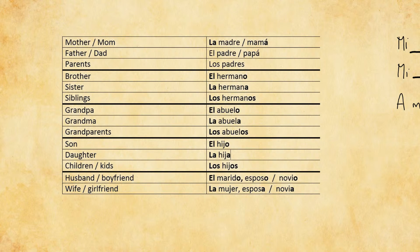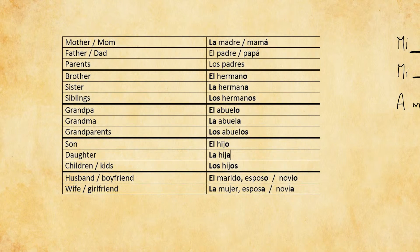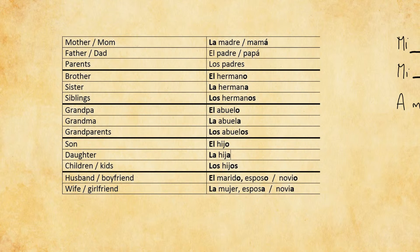Some other words: son, daughter, and children or kids. Son is 'el hijo', daughter is 'la hija', and children or kids together — again the same logic — is 'los hijos'. You can also have a husband or a boyfriend. Husband in Spanish is 'el marido' or 'el esposo' — they mean the same thing. Boyfriend is 'el novio'. For wife, we say 'la mujer' or 'la esposa' — note that 'la mujer' is also the word for woman in general, but can mean wife in context. Girlfriend is 'la novia'.